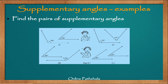Let us solve some examples on supplementary angles. The problem says: find the pairs of supplementary angles from the examples below. Our criterion for supplementary angles is the sum of two angles — let us say angle X and angle Y — and whenever their sum is equal to 180 degrees, they are known as supplementary angles.